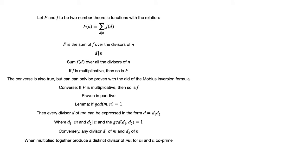Conversely, any divisor d₁ when multiplied together produce a distinct divisor of mn for m and n coprime. Let m equal q₁^j₁ q₂^j₂ up to qₛ^jₛ and n equal p₁^k₁ p₂^k₂ up to pᵣ^kᵣ. Then any divisor d of mn is of the form q₁^a₁ q₂^a₂ up to qₛ^aₛ multiplied by p₁^b₁ p₂^b₂ up to pᵣ^bᵣ, where aᵢ is greater than or equal to 0 and less than or equal to jᵢ and bᵢ is greater than or equal to 0 and less than or equal to kᵢ as was shown in part 1.